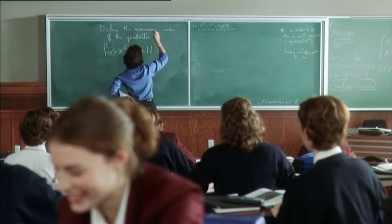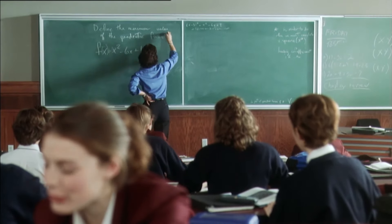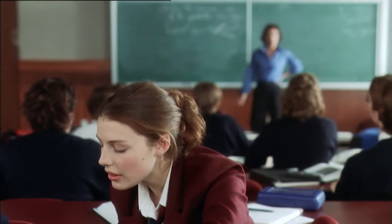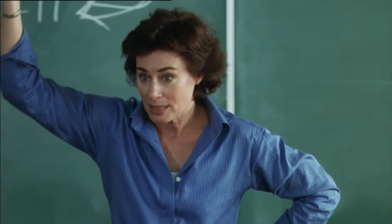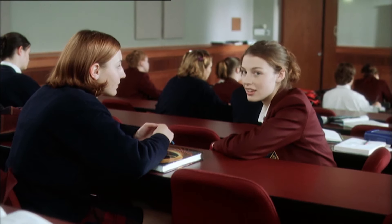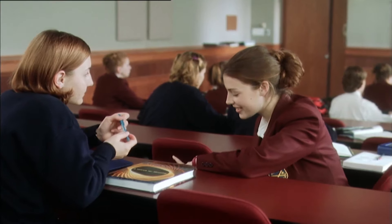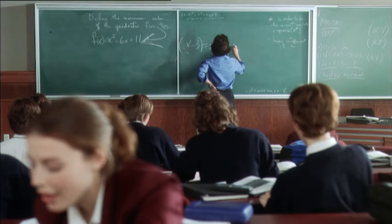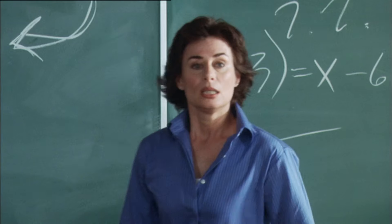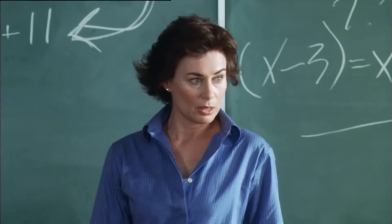We want to define the minimum value of the quadratic function. In order to do this, we must complete the square. Since we know the leading coefficient is one, we simply add half of the linear term to x and square the result to get the constant term of 11.